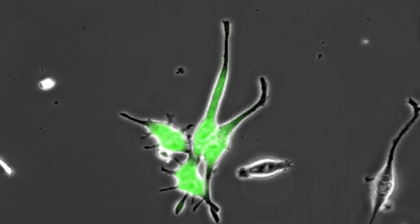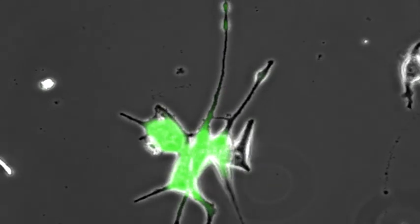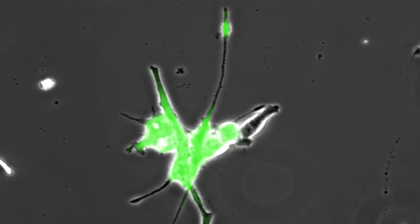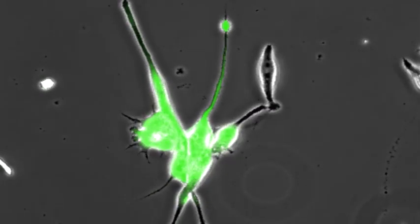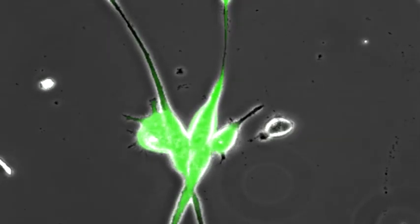In normal tissue, stem cells divide on average into one new stem cell and one differentiating cell. This is called asymmetric divisions. For asymmetric divisions, stem cells divided into two stem cells instead.